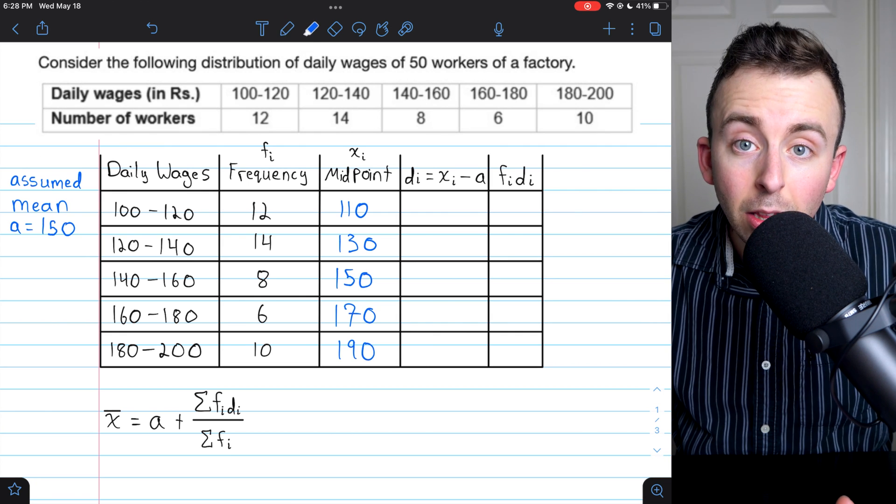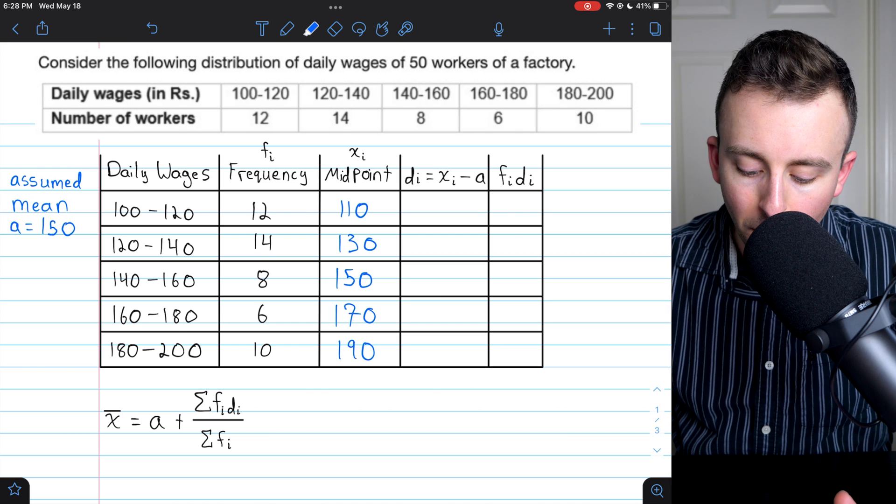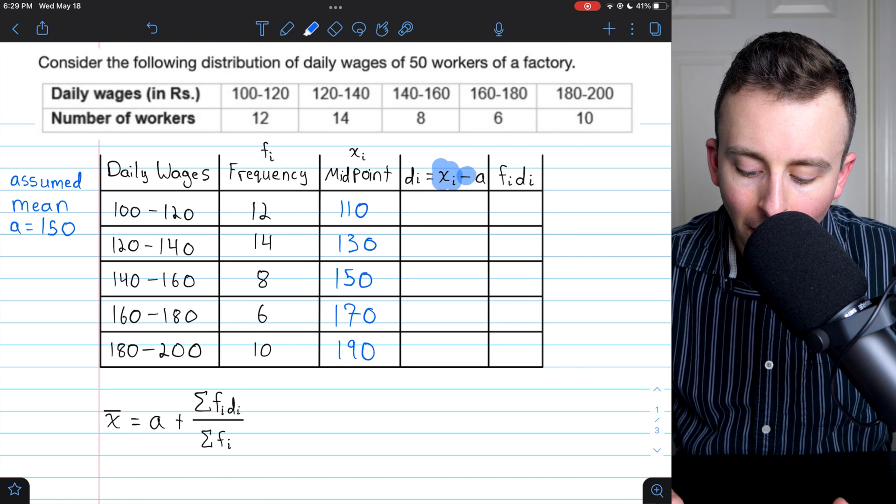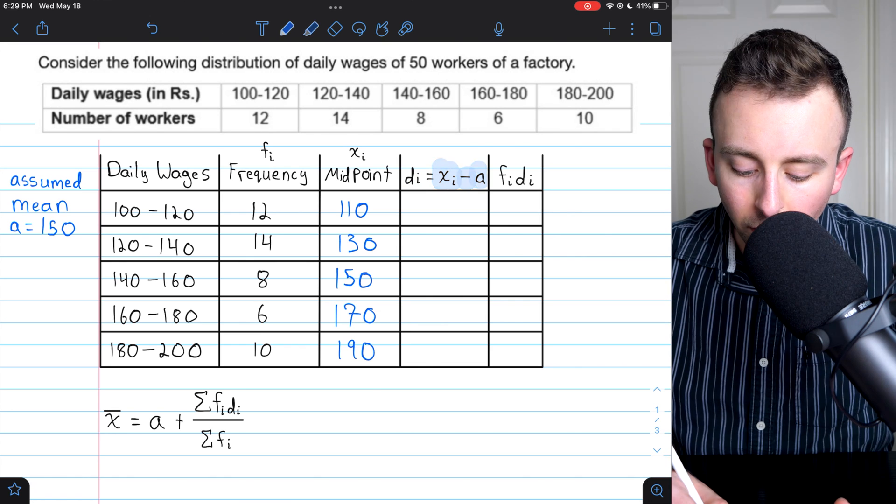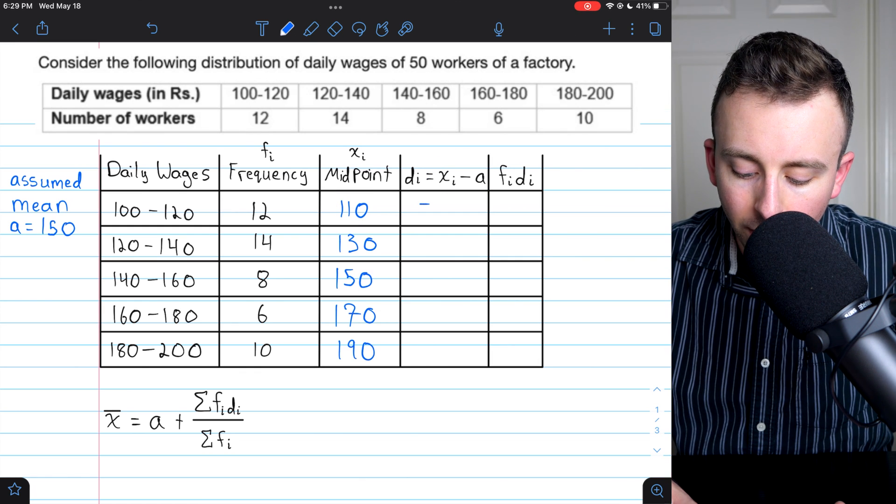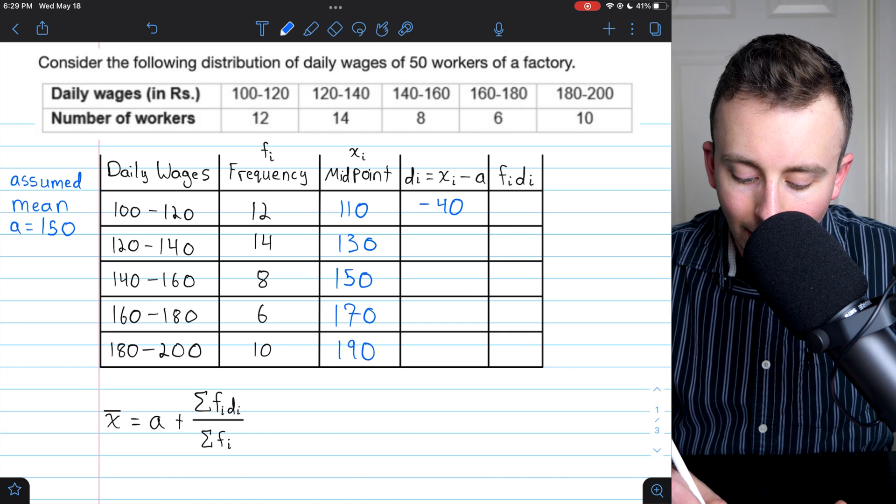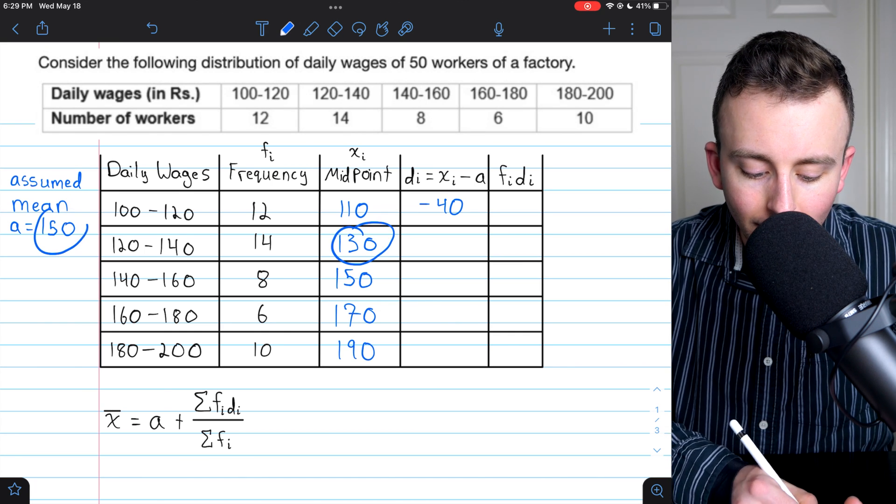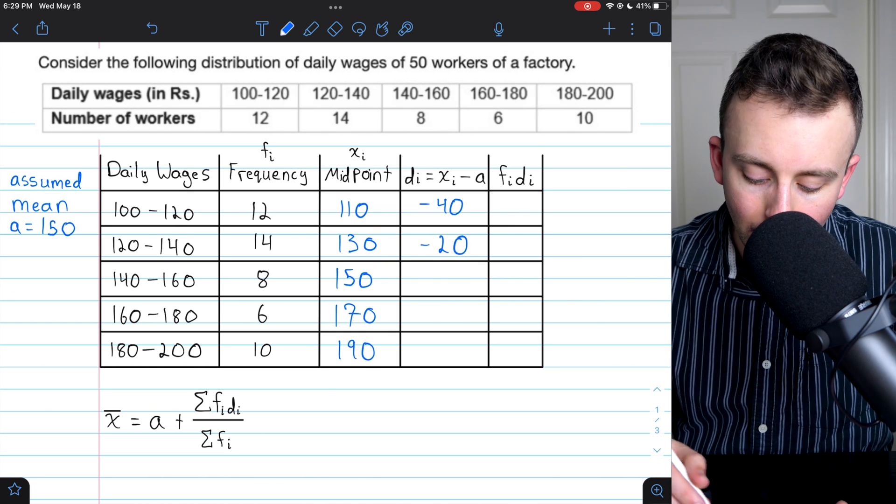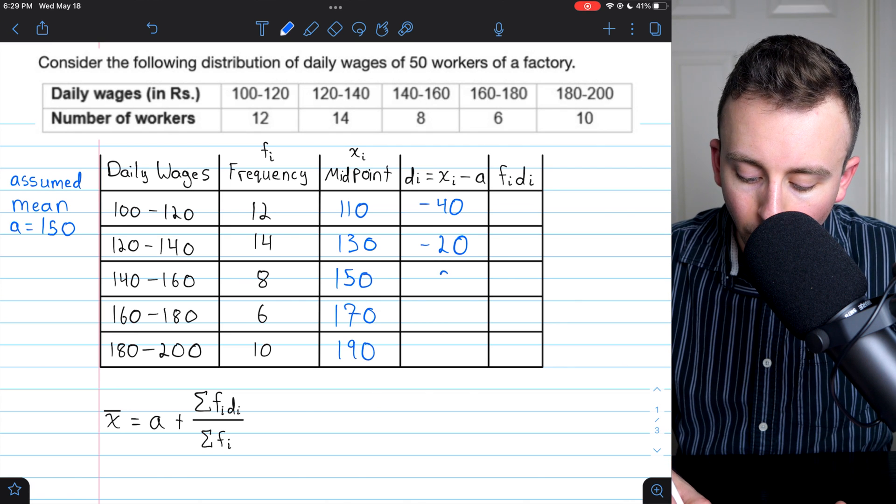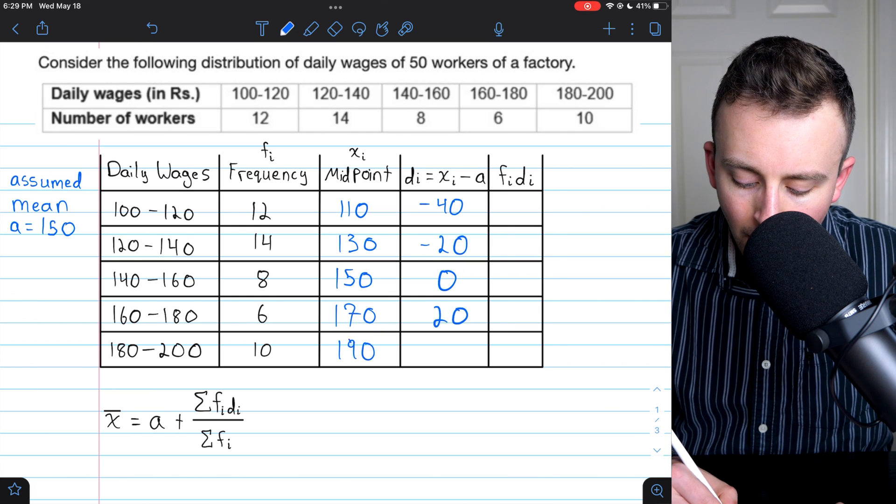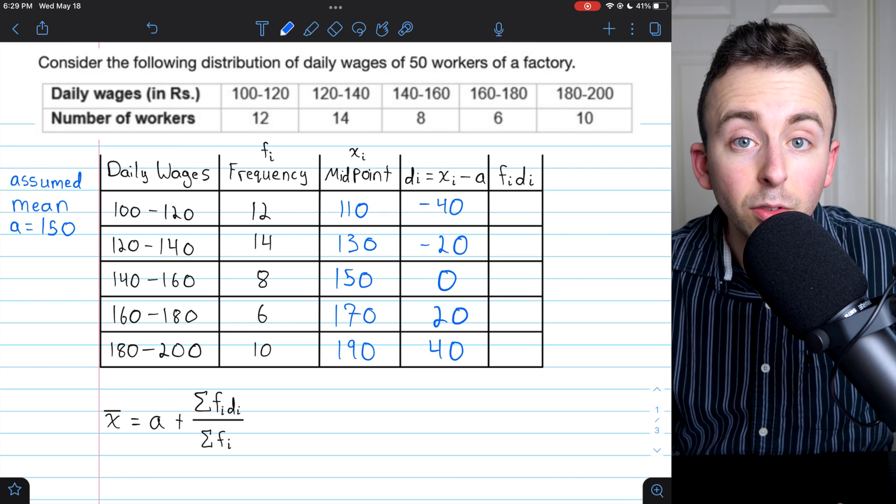Now that we've got the xi's and we've got our assumed mean, we can calculate the di's. Each di is just a midpoint minus the assumed mean. So we take 110 and subtract the assumed mean. 110 minus 150 is negative 40. Again, we take the midpoint, 130, and subtract the assumed mean. 130 minus 150 is negative 20. 150 minus the assumed mean of 150 is 0. 170 minus the assumed mean is 20. And 190 minus the assumed mean is 40.